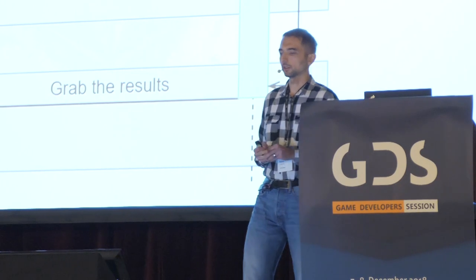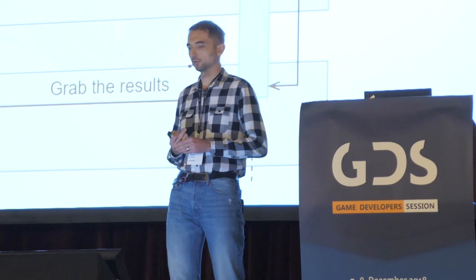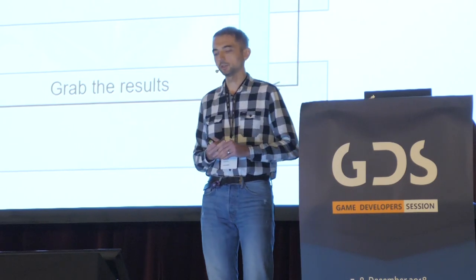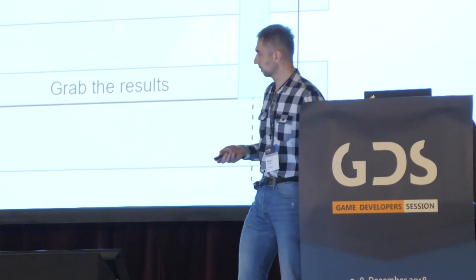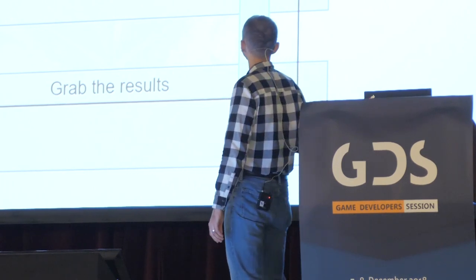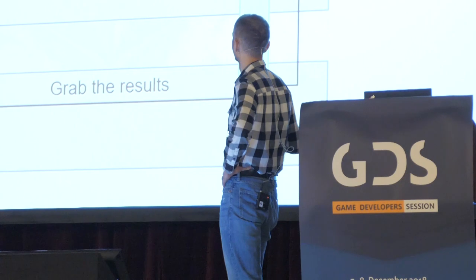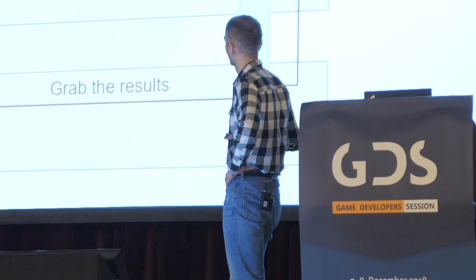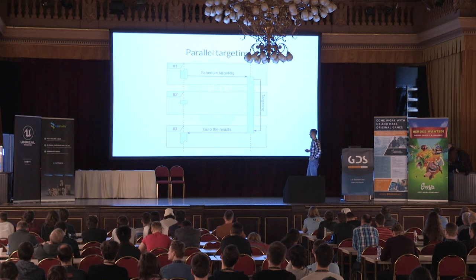We also use parallel targeting. Some target selectors are heavy, especially for large numbers of agents. For those activities, we schedule the targeting work to a worker thread. In frame one, we schedule the data; in frame two we wait; in frame three we grab the results and move to the next activity.